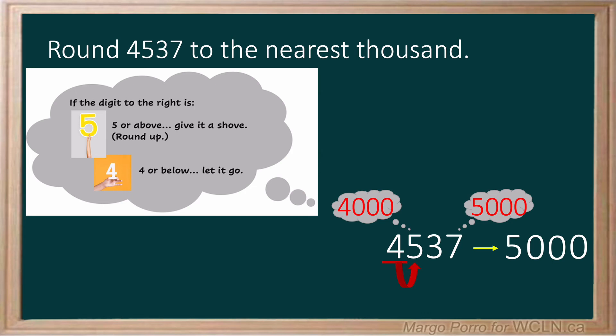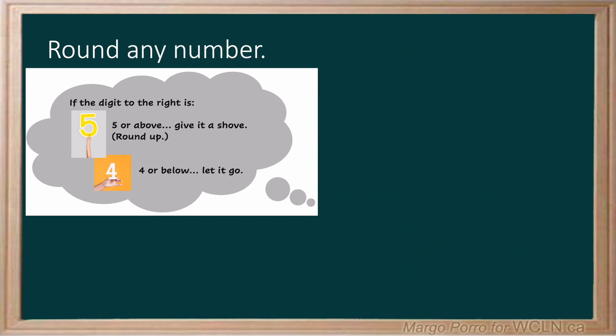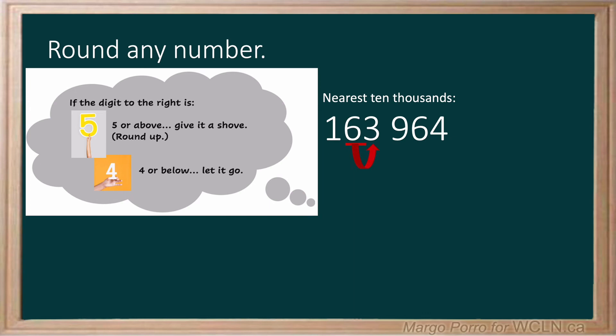You can use the rule to round any number. You can round to ten thousands. First, we'll underline the ten thousands place and look at the digit to the right. Is the digit to the right weak or strong? There are three thousands — three fits into the let it go category. It is a weak number. We won't change the ten thousands or the numbers before it, but the digits after that place change to zeros.